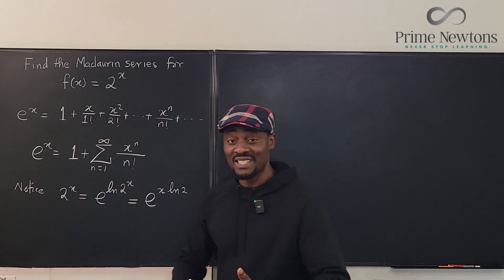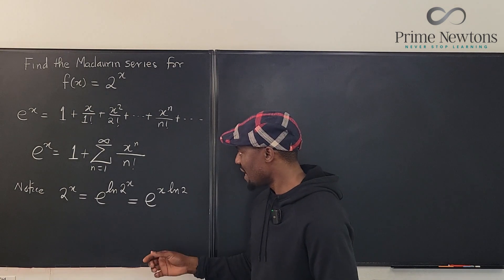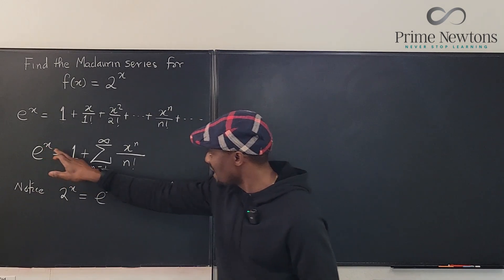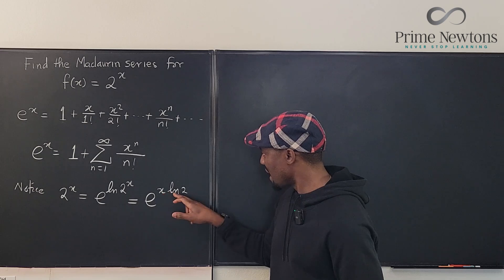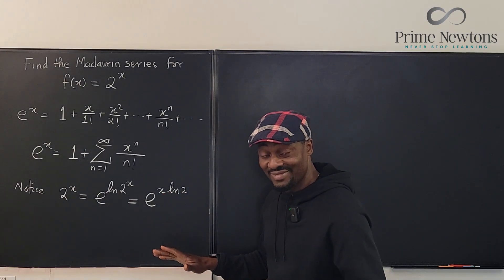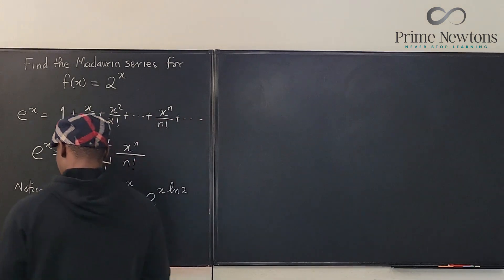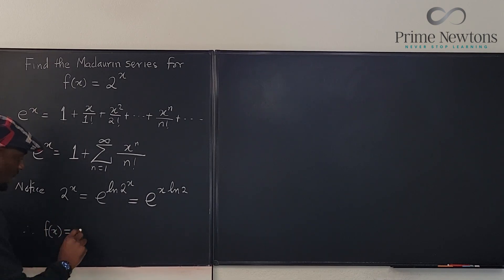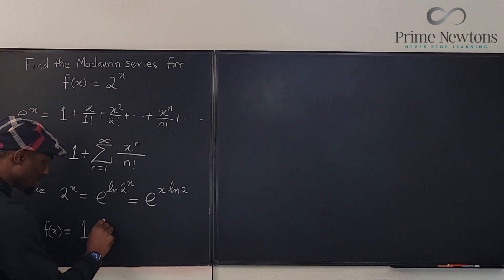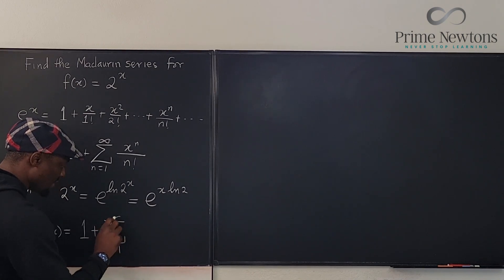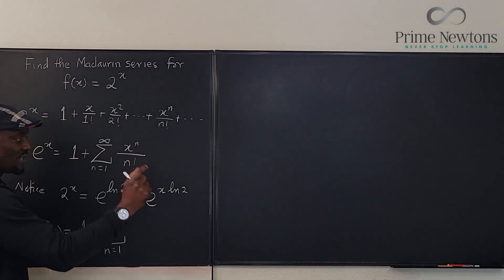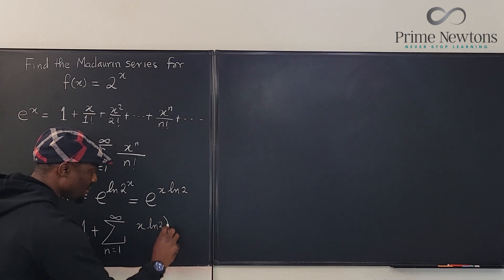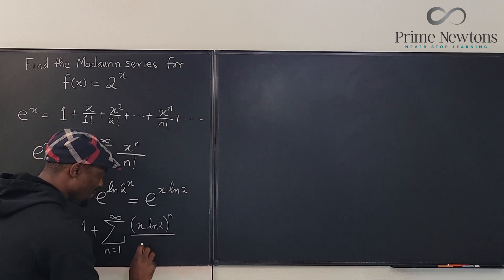The good thing about Maclaurin series is that we can take this, because x ln of two is a scalar multiple of x, and we can just replace x in this formula with x ln of two. So f of x will be equal to one plus the sum from n equals one to infinity of x ln of two raised to power n over n factorial.